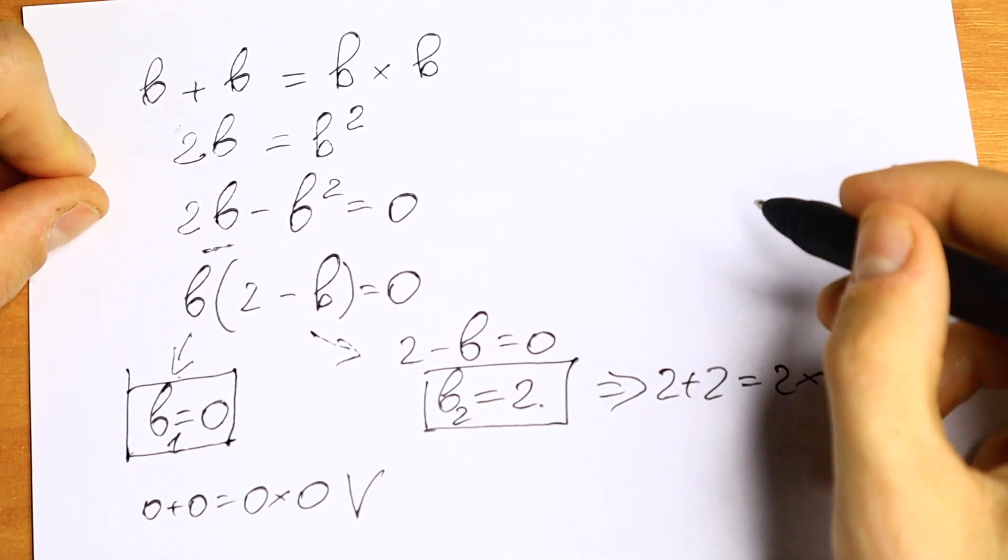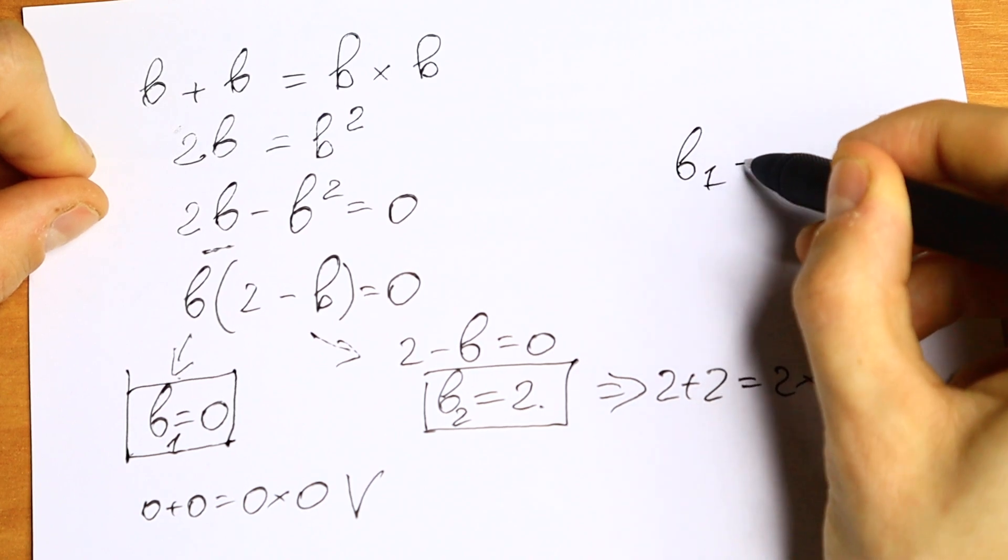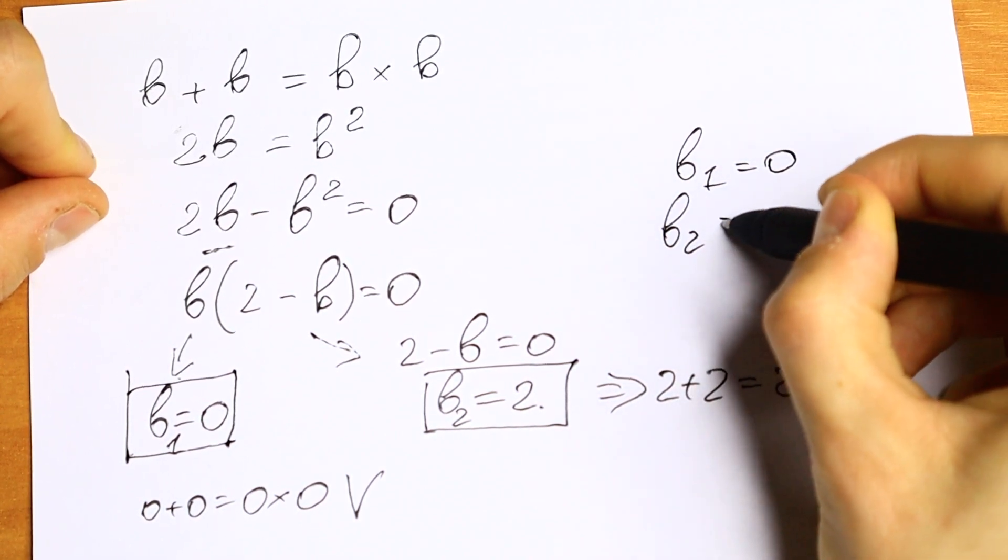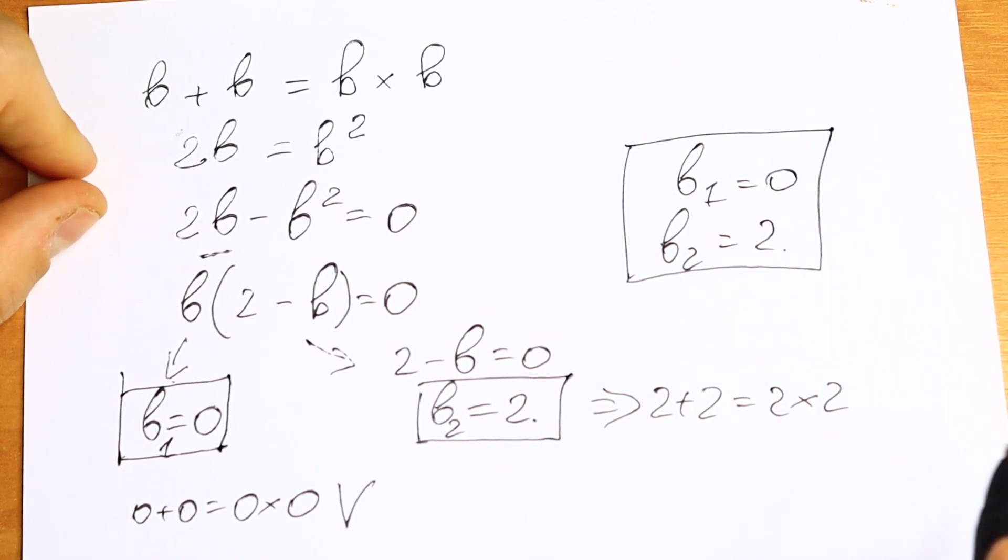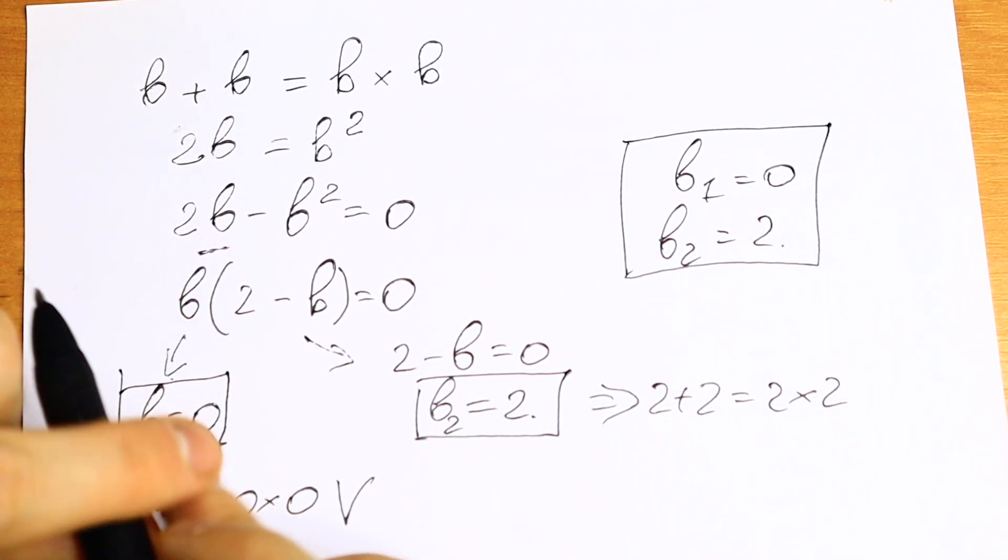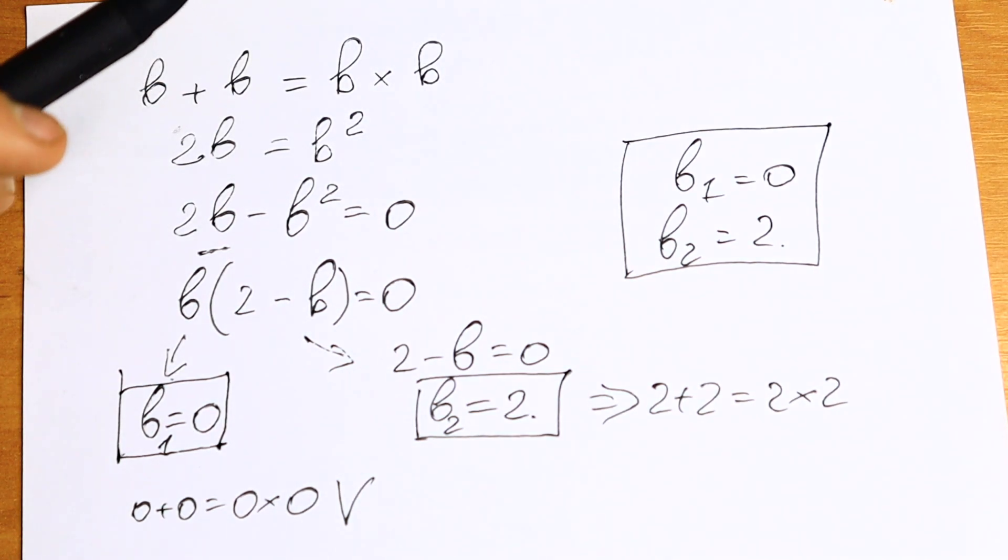So we will have 2 roots: b first equals 0 and second b equals 2. If you still have any questions, write a question in the comment. Thank you so much for watching and see you in the next videos.